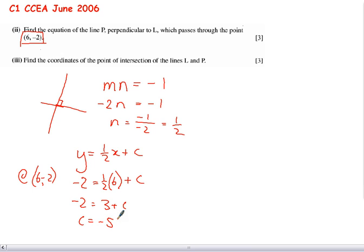And so the equation of the line is y equals a half x minus 5.